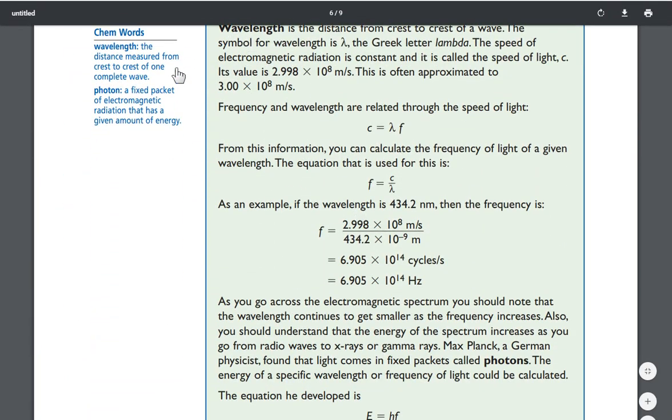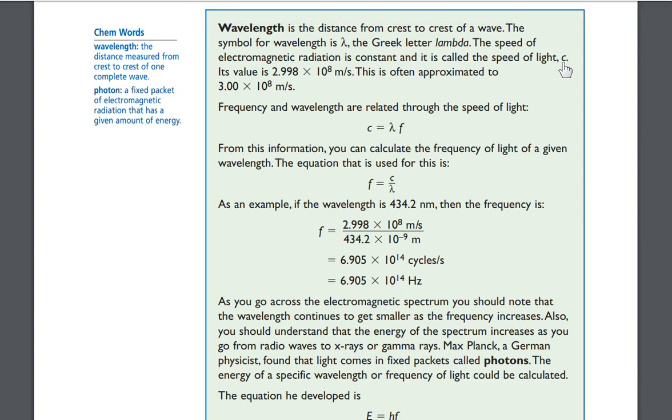Wavelength is the distance from crest to crest of a wave. The symbol for wavelength is lambda, the Greek letter lambda. The speed of electromagnetic radiation is constant and it is called the speed of light. Its symbol is the letter C. Its value is 2.998 times 10 to the eighth power meters per second. This is often approximated to 3.00 times 10 to the eighth power meters per second. Frequency and wavelength are related through the speed of light.